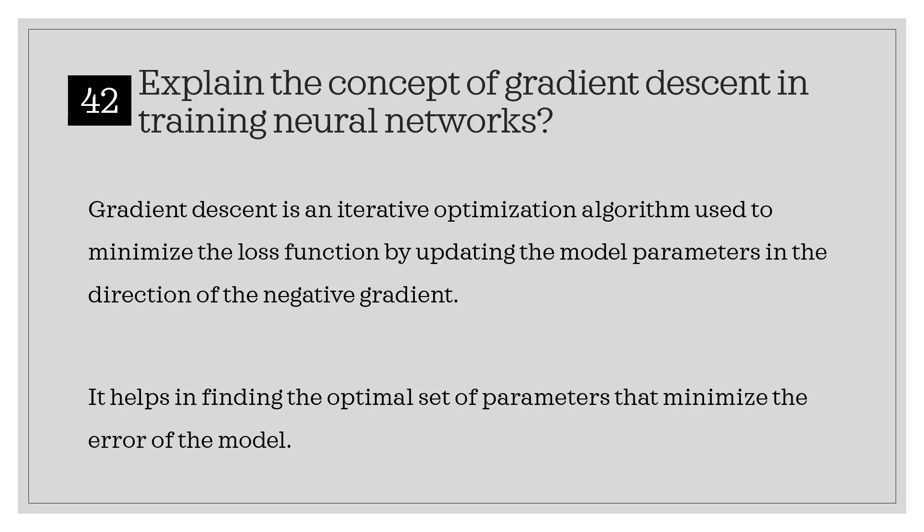Explain the concept of gradient descent in training neural networks. Gradient descent is an iterative optimization algorithm used to minimize the loss function by updating the model parameters in the direction of the negative gradient. It helps in finding the optimal set of parameters that minimize the error of the model.